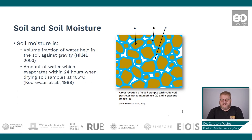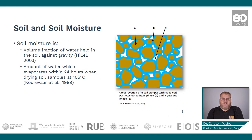Soil moisture is the volume fraction of water held in the soil against gravity. Another definition is that soil moisture is the amount of water which evaporates within 24 hours when drying soil samples at 105 degrees Celsius.